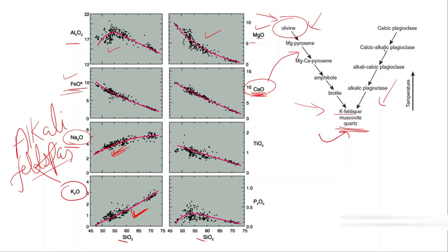How do we classify whether this calcium oxide is getting crystallized in pyroxene or in calcium plagioclase? For this, we need to look at the Al2O3 or alumina diagram.